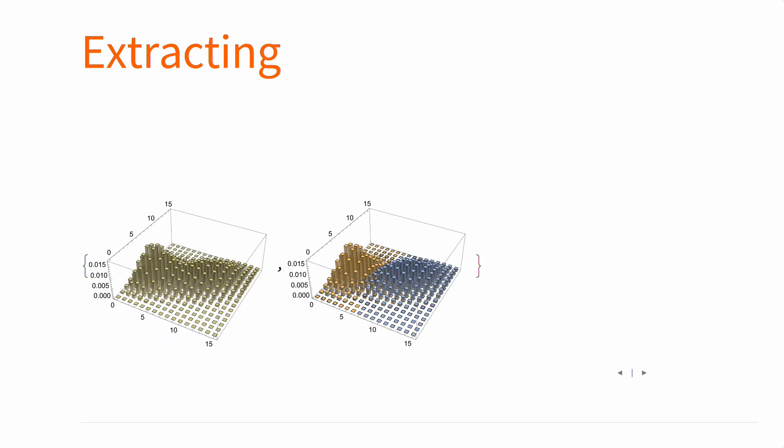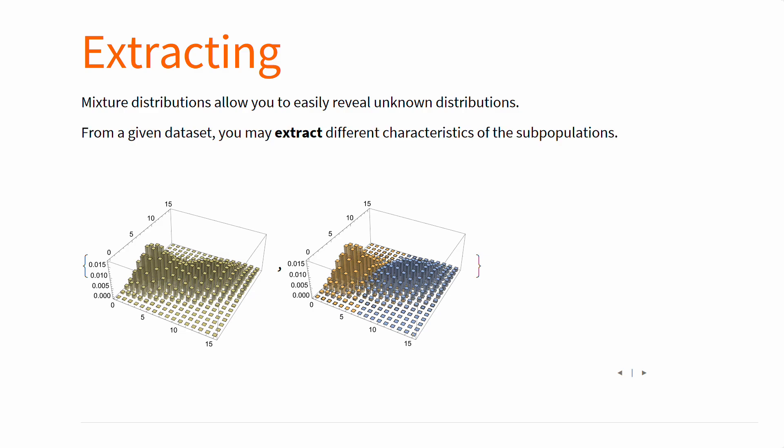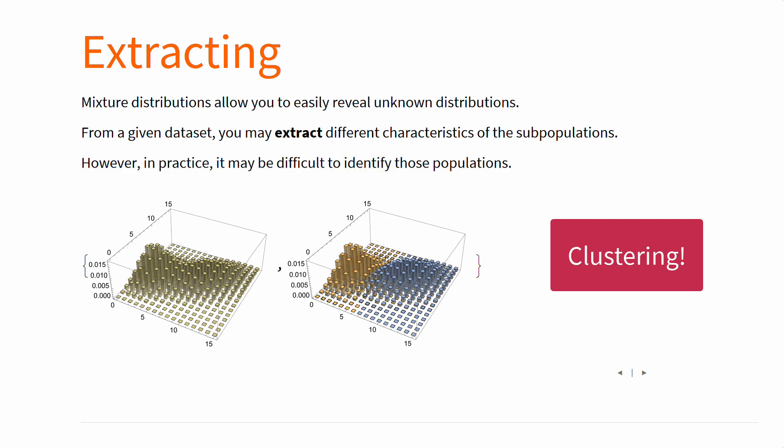The second application is the opposite. Mixture distributions can allow you to reveal facts about unknown distributions. From a given data distribution with multiple peaks, you can extract different characteristics of the subpopulations. Keep in mind, in practice, it may be very difficult to identify these subpopulations. This is closely related to clustering. You may be able to assess the orange and blue subpopulations, but not what they are in your application.